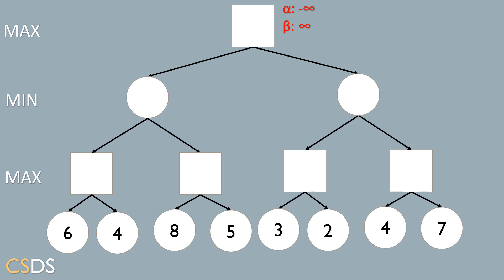Alpha and beta are passed down the tree. We start traversing and updating alpha, beta, and v, and we prune branches where alpha is greater than or equal to beta. The value six of the leftmost node is passed up to the parent max node. Because we are at a max node, we update alpha by taking the max of v (which is six) and alpha (which is minus infinity), giving a new alpha value of six.